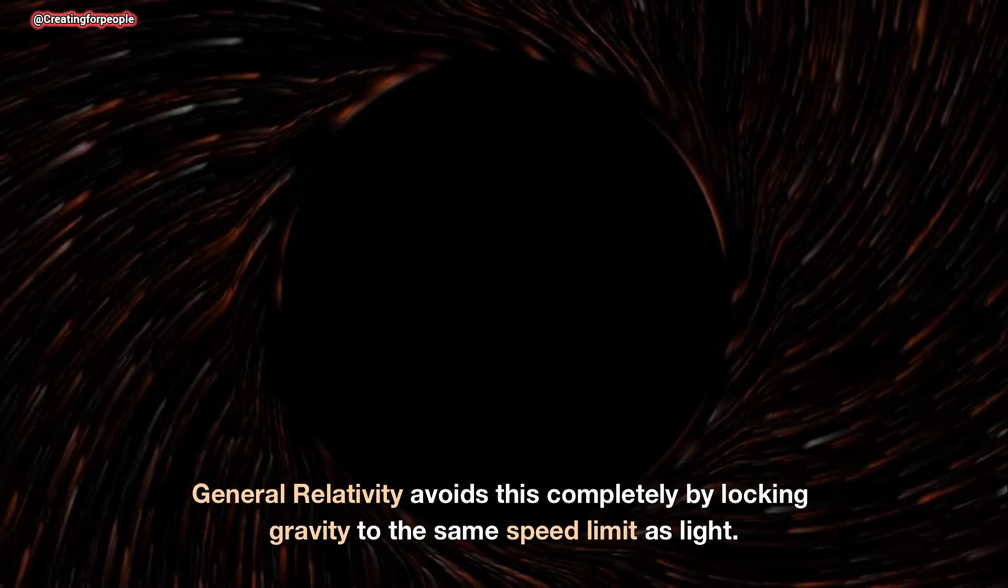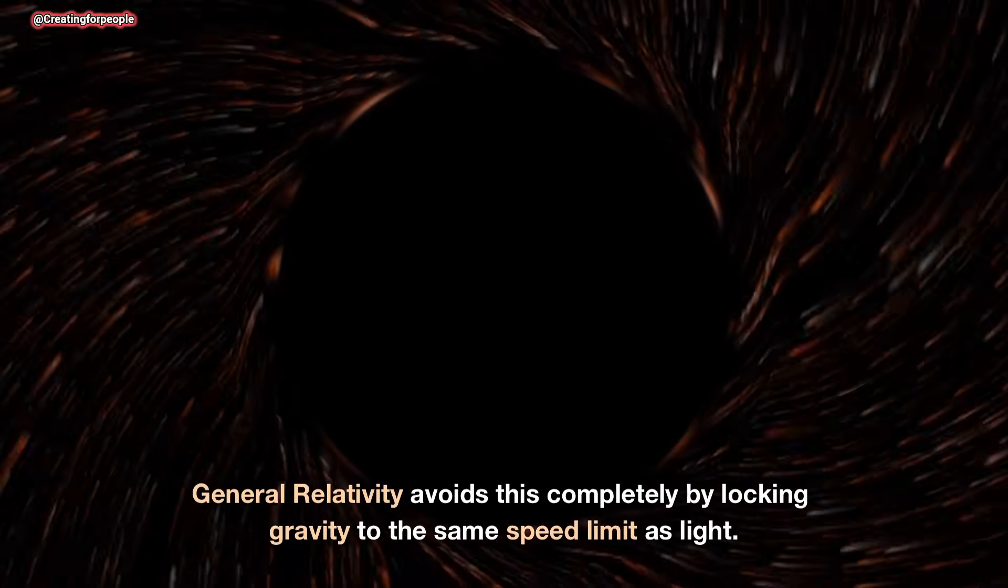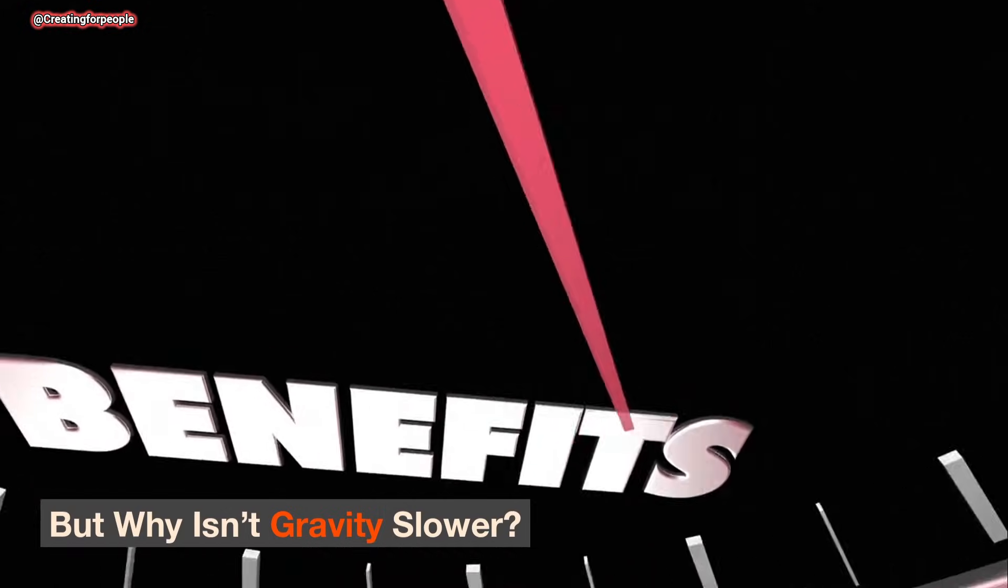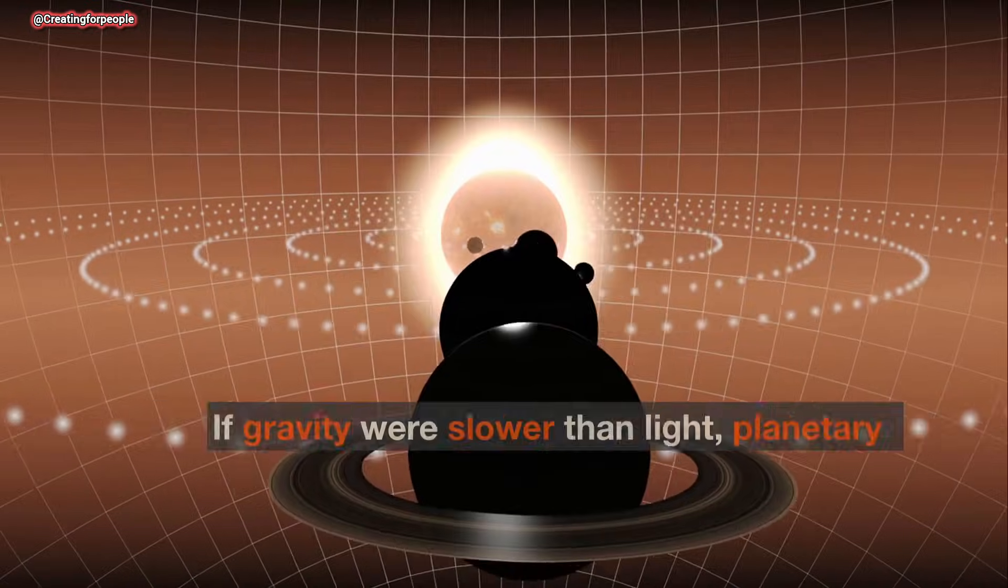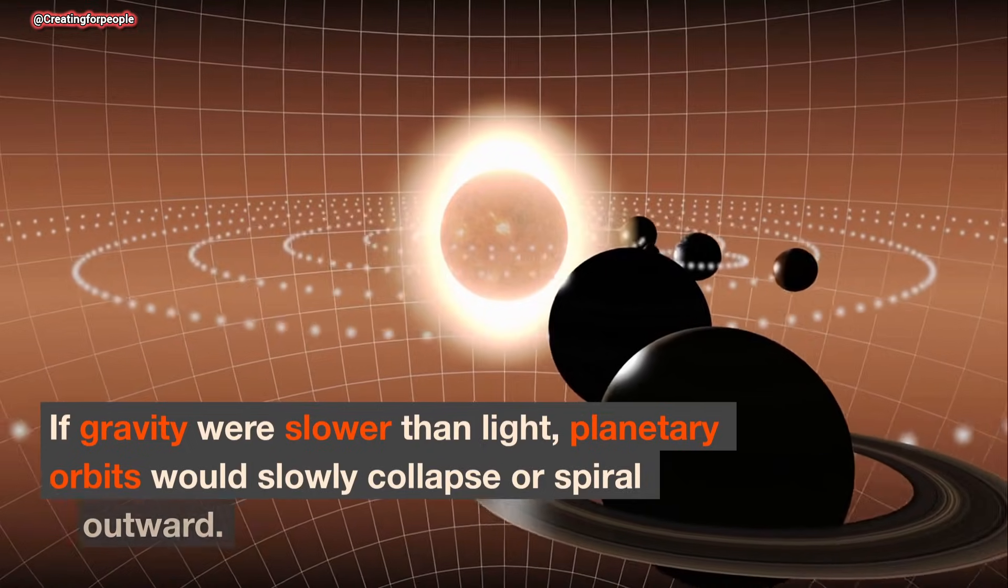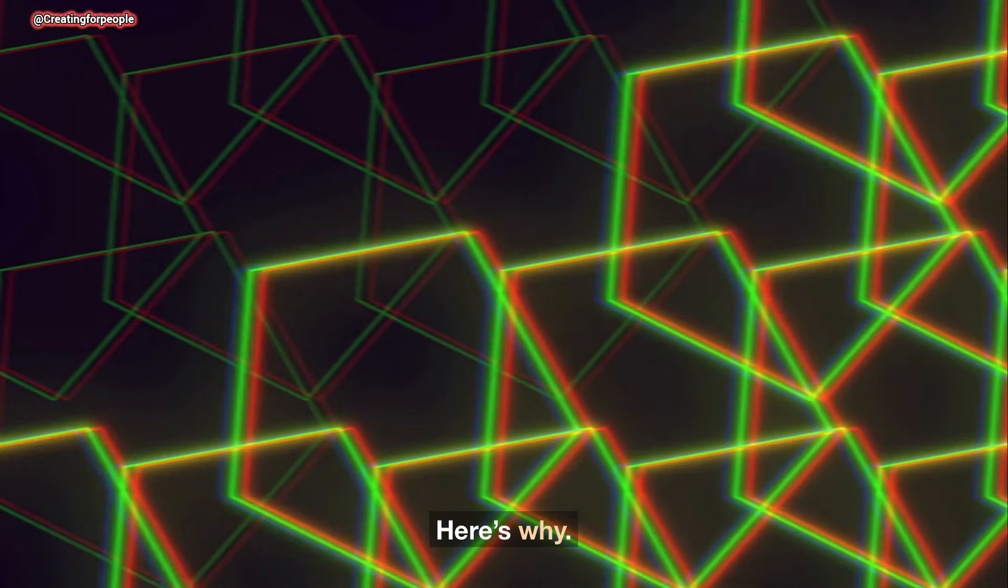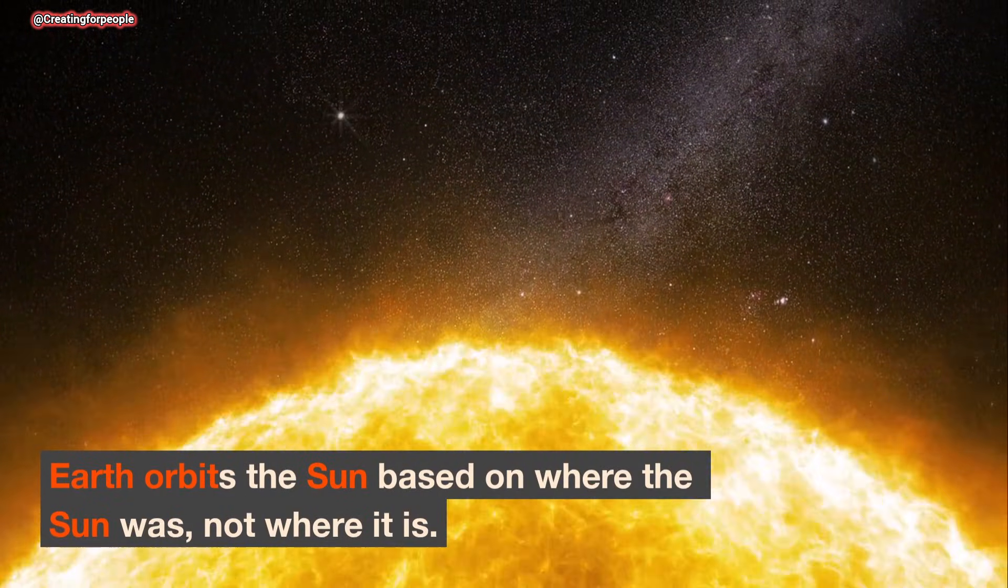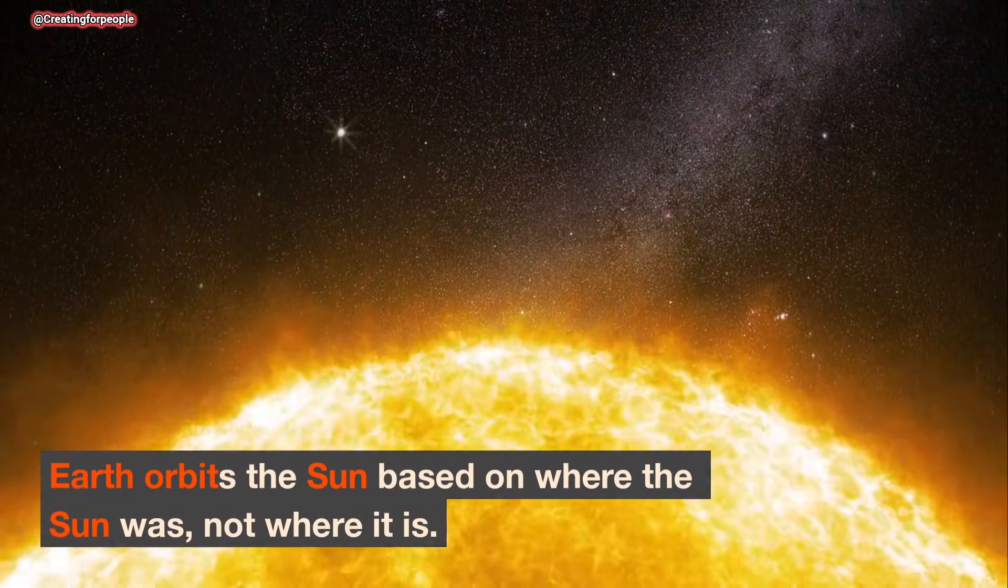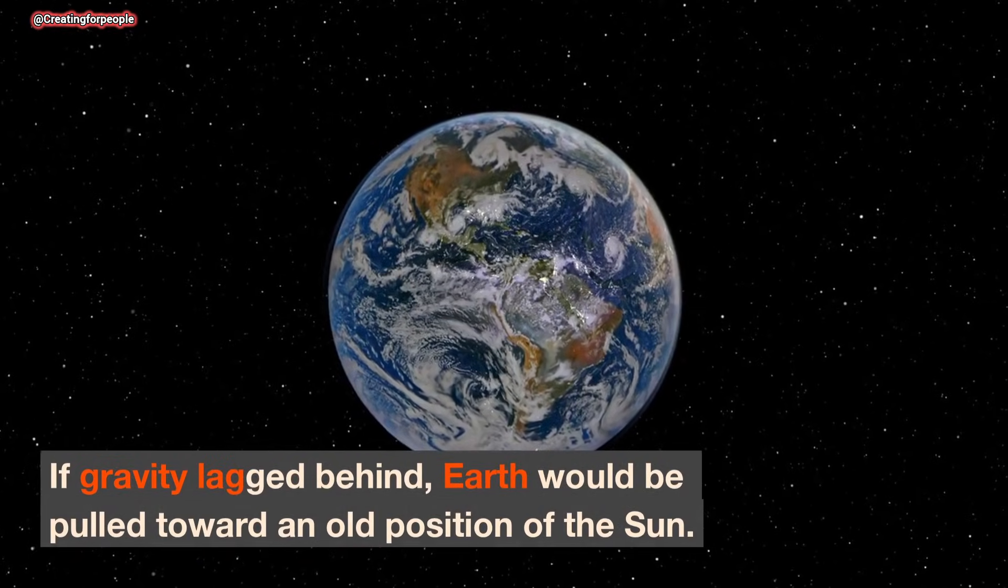General relativity avoids this completely by locking gravity to the same speed limit as light. But why isn't gravity slower? This is where things get really interesting. If gravity were slower than light, planetary orbits would slowly collapse or spiral outward. Here's why: Earth orbits the sun based on where the sun was, not where it is. If gravity lagged behind, Earth would be pulled toward an old position of the sun.